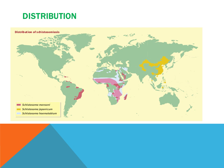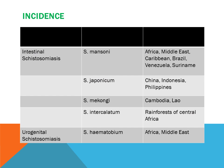Distribution of Schistosomiasis. This is a map showing where Schistosomiasis is prevalent, with red, yellow and blue indicating where they are prevalent. Schistosoma mansoni was found in Africa, Middle East, Caribbean, Brazil, Venezuela and Suriname. Schistosoma japonicum, found in China, Indonesia and Philippines.